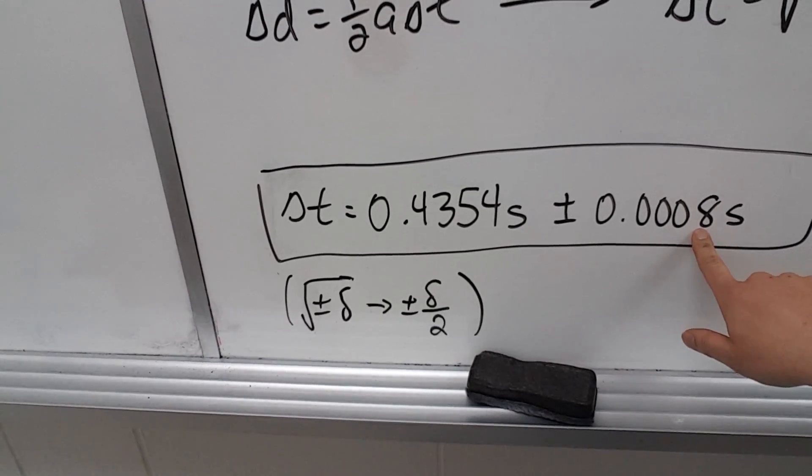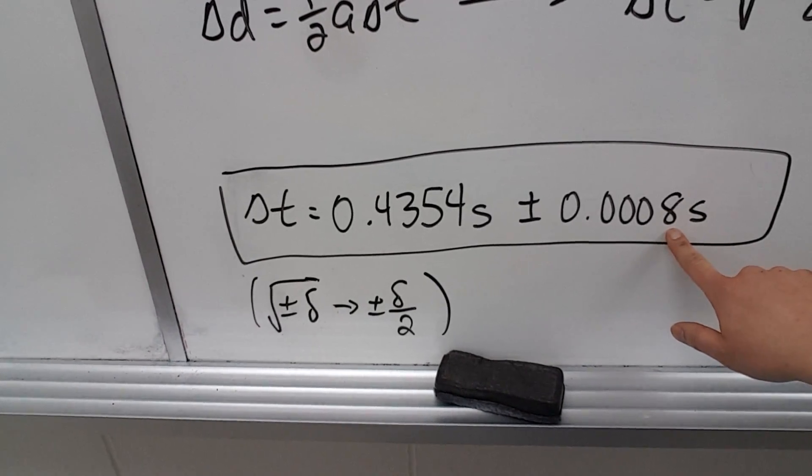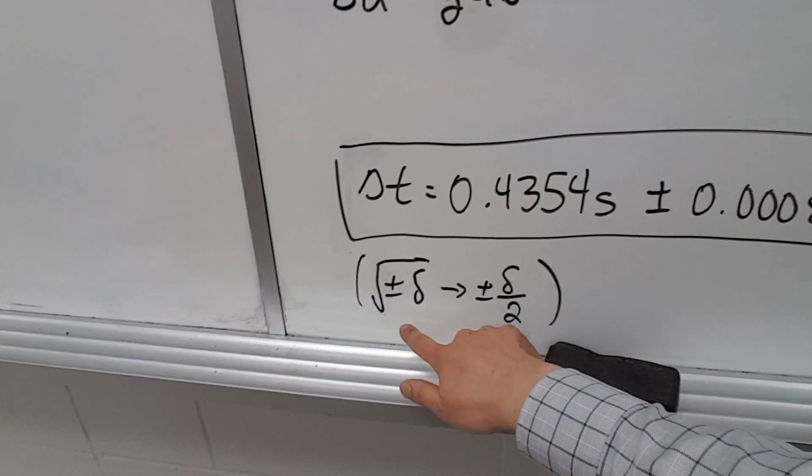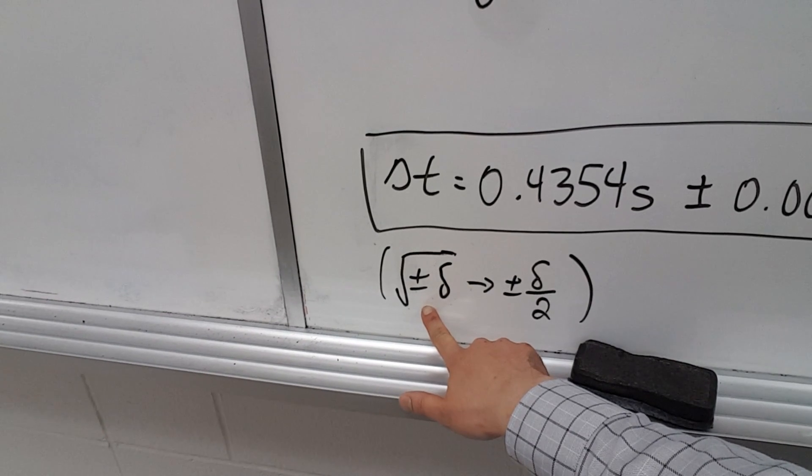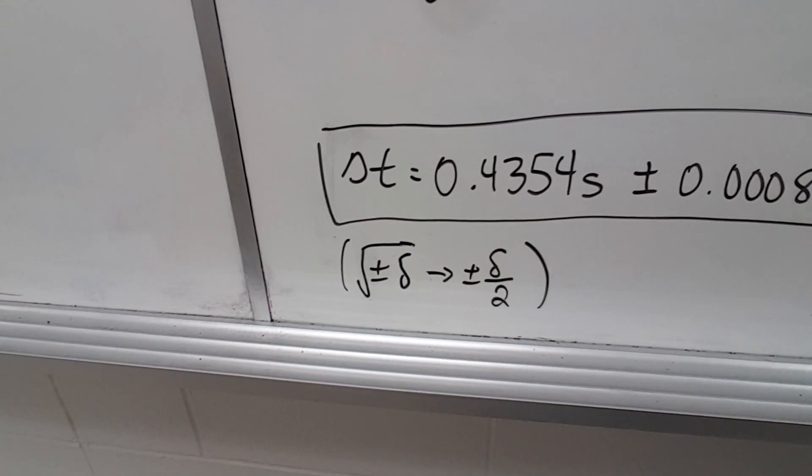What you'll also notice in this data is that this would actually work out to half of your initial calculated uncertainty. Because any time that you perform a square root of an uncertainty, the final uncertainty actually cuts in half. Pretty neat, isn't it?